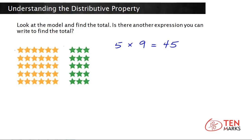In this new model, we have separated out part of the number in each row, so there's a yellow portion and a green portion. The number of rows has remained unchanged — there are still five rows. We've broken up the number in each row into two separate parts. In the first part there are six stars, and in the second part there are three stars.